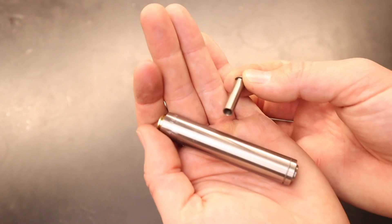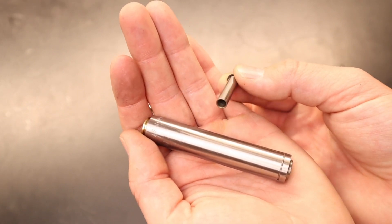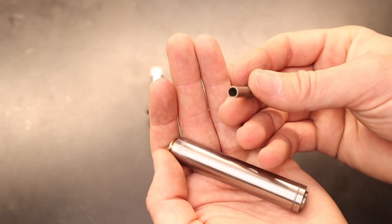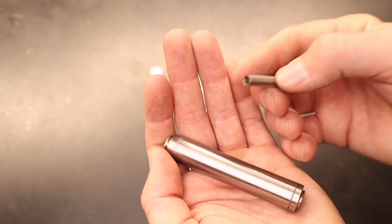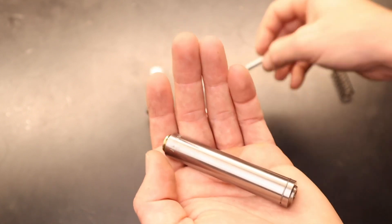These seating stems, I believe, are interchangeable. You'd have to double-check on Redding's website. I'm pretty positive that Redding would have interchangeable seating stems because they have a ton of option parts for their dies.